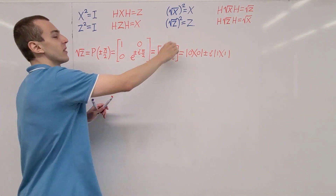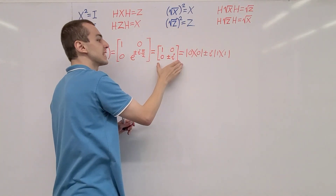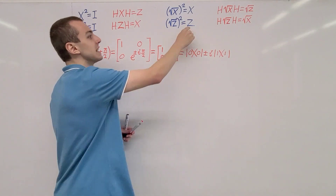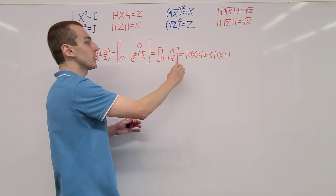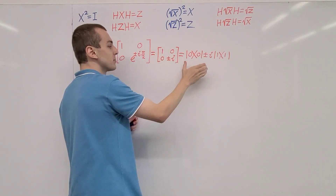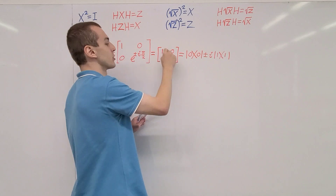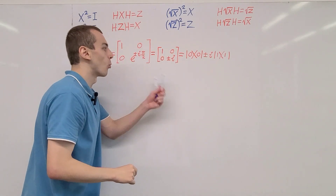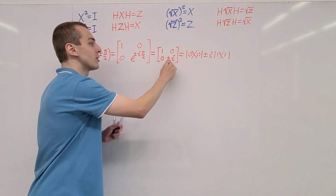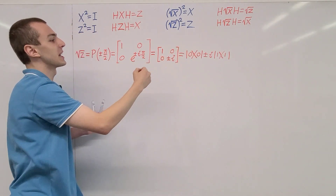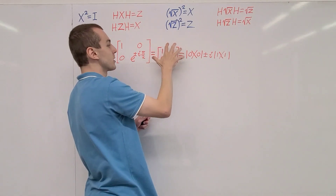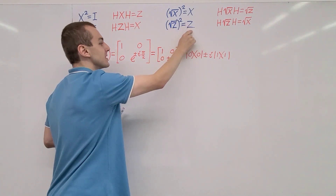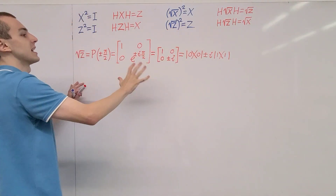Both gates satisfy the square root relationship. If you apply this gate twice — which is equivalent to squaring this matrix — you will get the Pauli Z. Because this is a diagonal matrix, we just need to square these entries. If you square plus or minus i, you get minus one. So it doesn't matter whether it's plus or minus i — you get minus one either way. And the diagonal matrix with entries 1 and minus 1 is the Pauli Z gate.